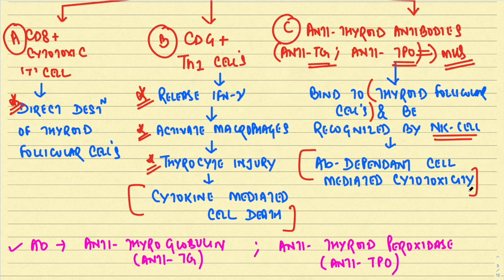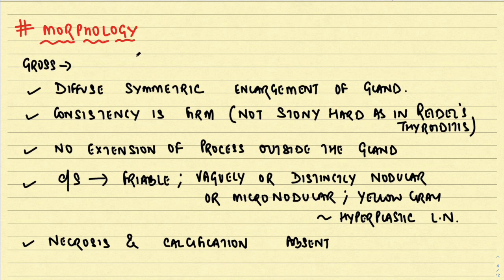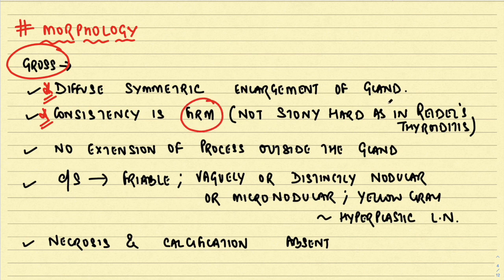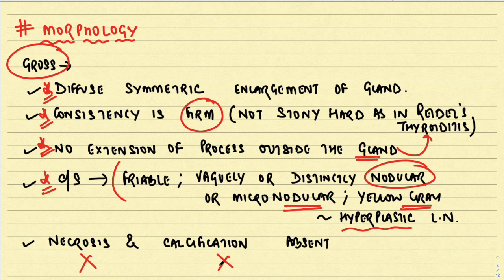Looking at gross morphology, Hashimoto's thyroiditis shows diffuse symmetric enlargement of the gland. The consistency is firm — not stony hard as in Riedel's thyroiditis, a differential diagnosis. There is no extension outside the gland, unlike Riedel's thyroiditis. The cut section is friable, vaguely or distinctly nodular, micronodular, with a yellowish-tan color resembling a hyperplastic lymph node. Necrosis and calcification are absent.